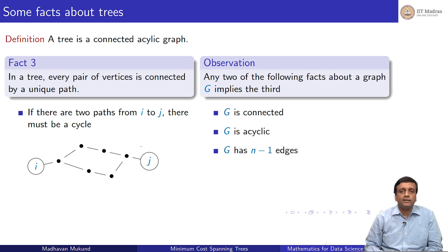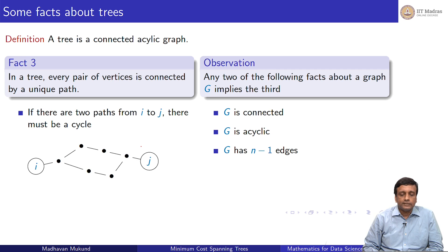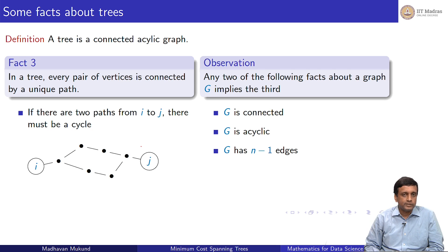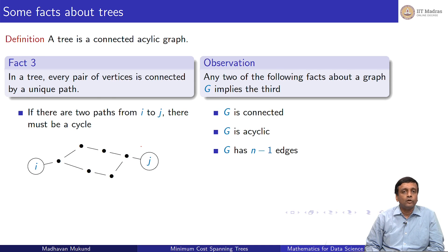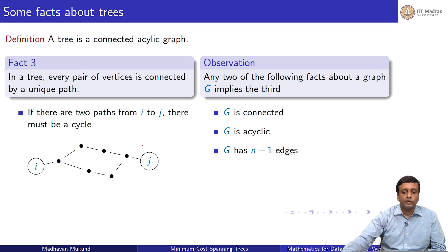To summarize: any two of these three conditions — connected and acyclic, connected with n minus 1 edges, or acyclic with n minus 1 edges — are sufficient to conclude that a graph is a tree. This is a very useful fact to remember when working with trees.